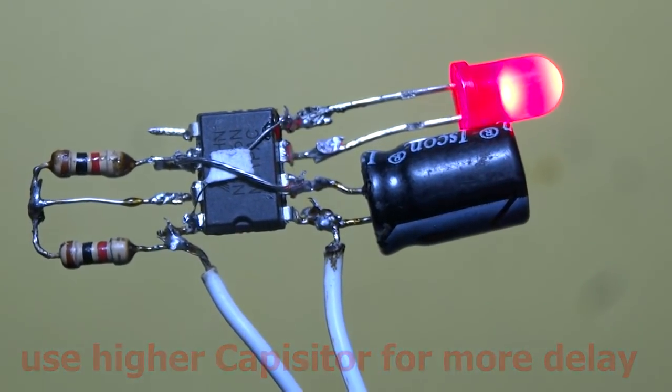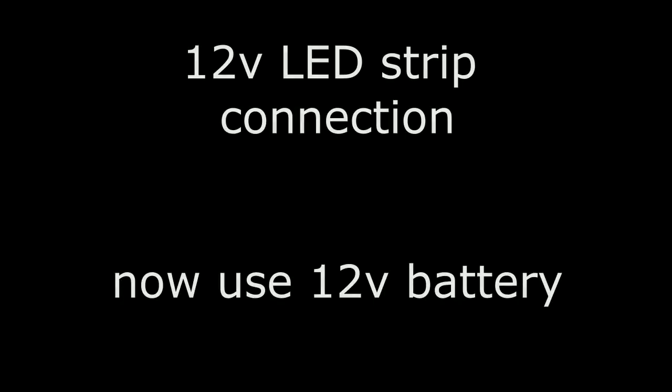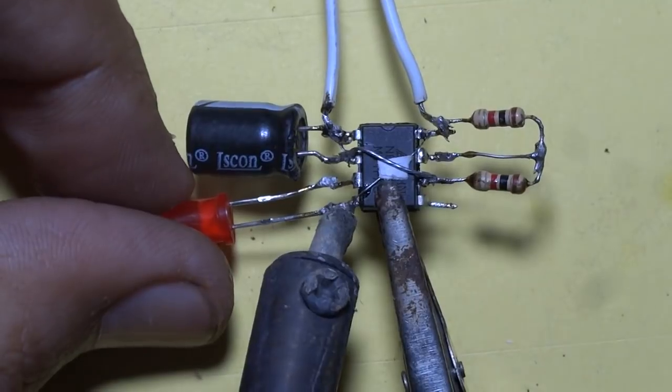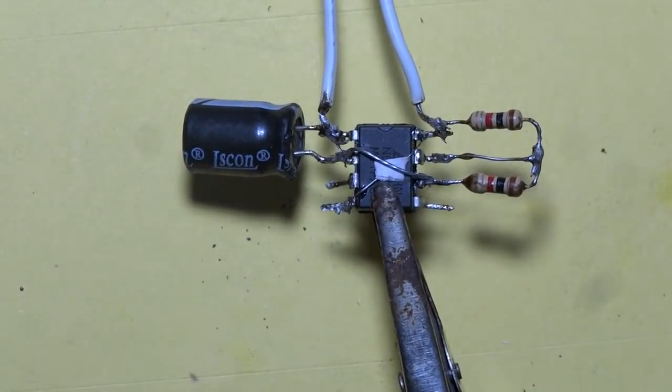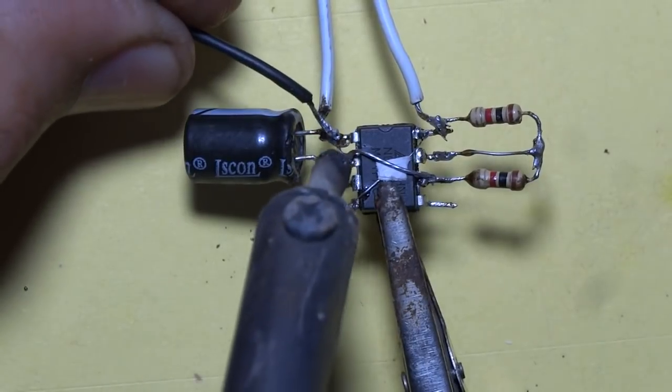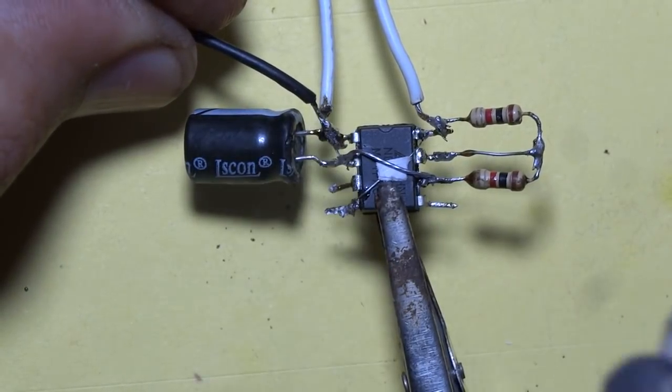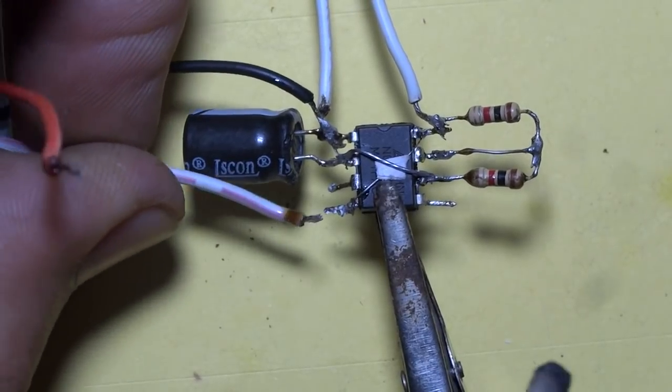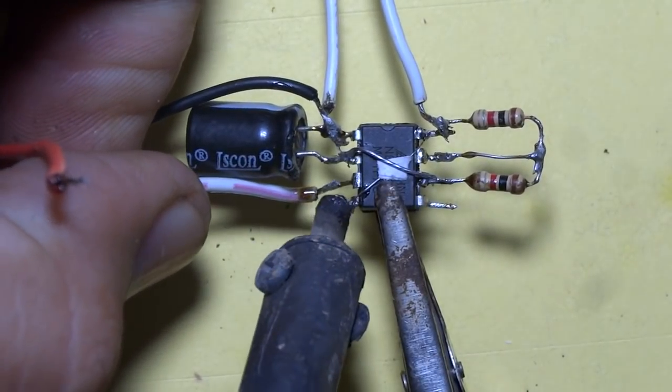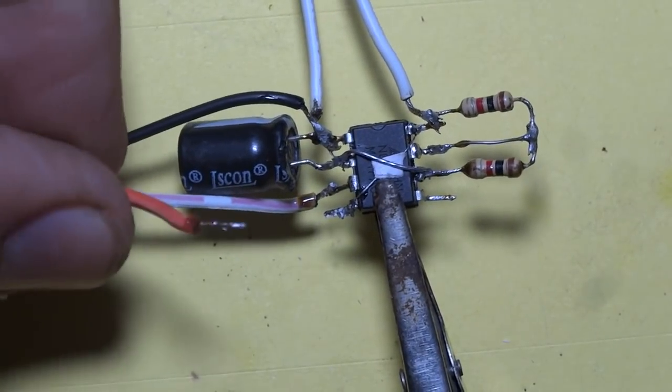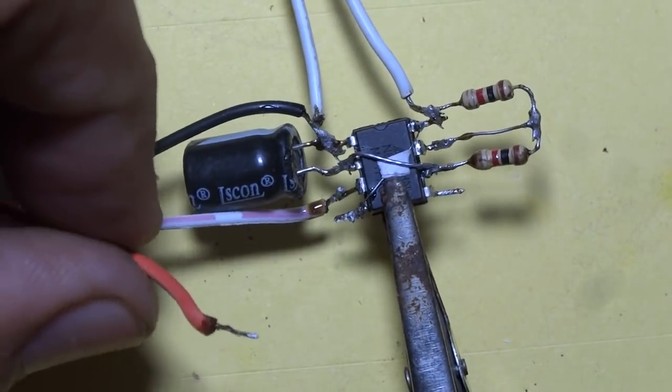Now we connect 12 volt LED strip with output point. This is the negative point of LED strip. It is 12 volt strip common point of LED strip and plus point of LED strip.